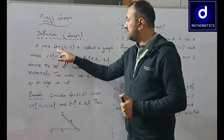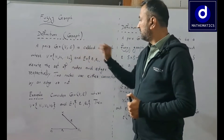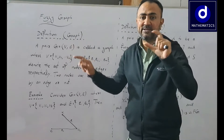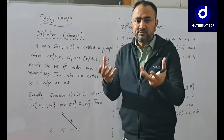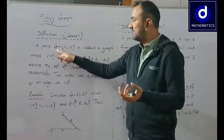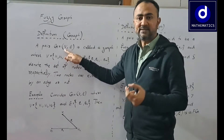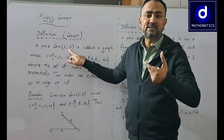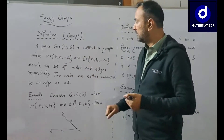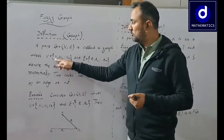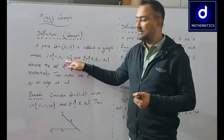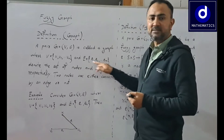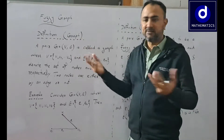A graph is a pair G = (V, E) where V is the set of nodes and E is the set of edges. In graph theory, V is the set of vertices or nodes — v1, v2, up to vn — and E is the set of edges — e1, e2, up to em.